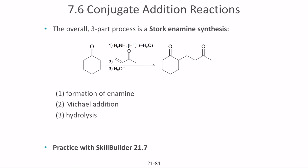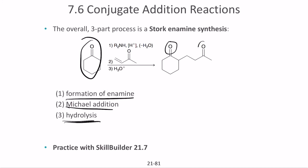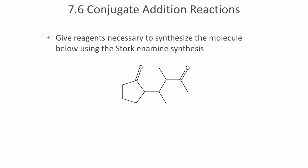The three steps of Stork enamine synthesis are: first, formation of the enamine (converting the aldehyde or ketone into an enamine); second, Michael addition using the enamine; and third, hydrolysis to remove the enamine and restore the aldehyde or carbonyl group.